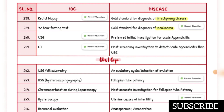Gold standard for diagnosis of Hirschsprung disease is rectal biopsy. Gold standard for diagnosis of insulinoma is 72-hour fasting test. Preferred initial investigation for acute appendicitis is ultrasound. Most sensitive screening investigation to detect acute appendicitis — more than ultrasound — is CT.